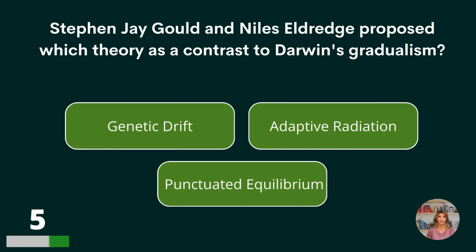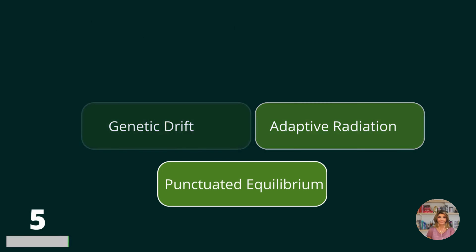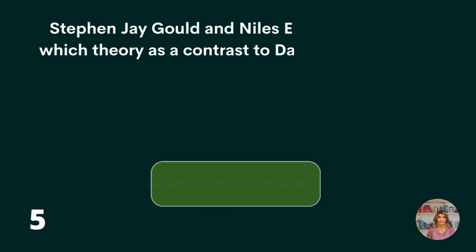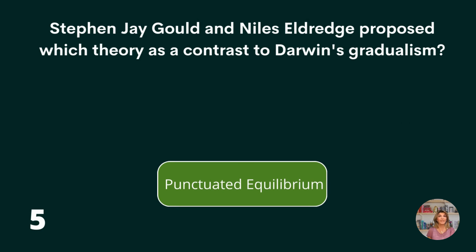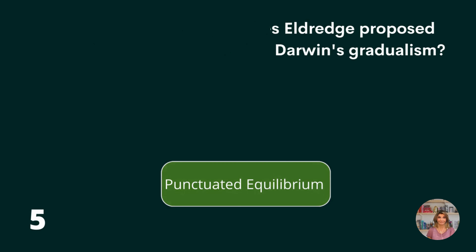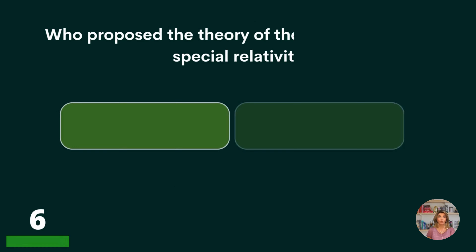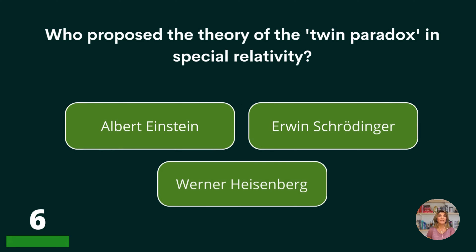Stephen Jay Gould and Niles Eldridge proposed which theory as a contrast to Darwin's gradualism? Genetic drift, adaptive radiation, or punctuated equilibrium? Punctuated equilibrium.